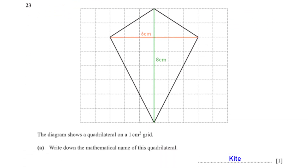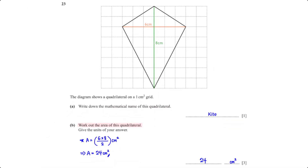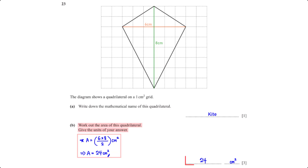The diagram shows a quadrilateral on a 1 cm square grid. Write down the mathematical name of this quadrilateral. The name of the given quadrilateral is a kite. Work out the area of this quadrilateral and give the units of your answer. The area of the kite equals the product of its diagonals: 6 cm times 8 cm divided by 2, which gives us 24 cm squared. If you don't remember this formula, you can split the kite into two triangles and find the sum of their areas.